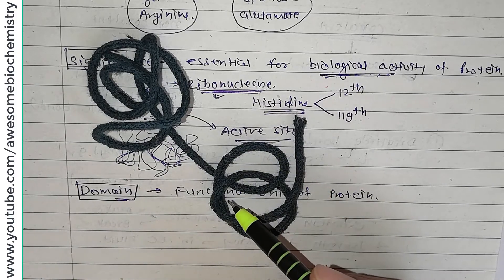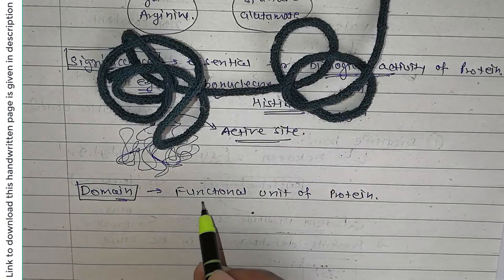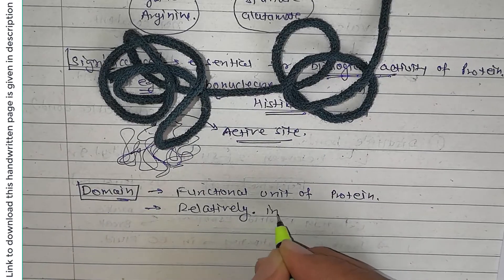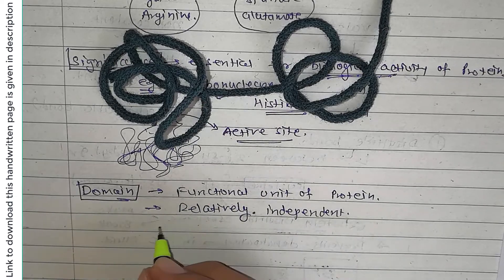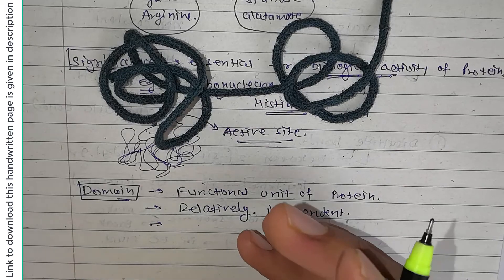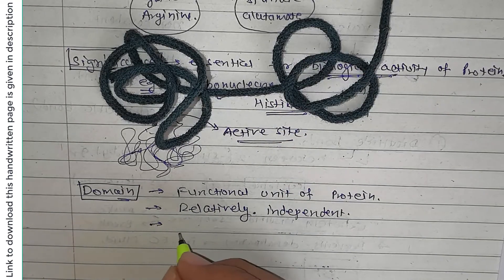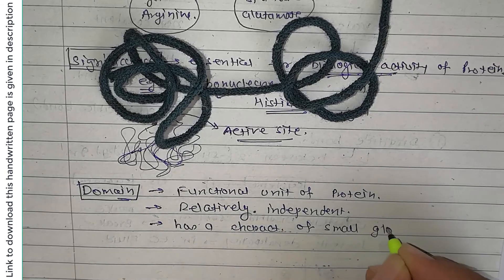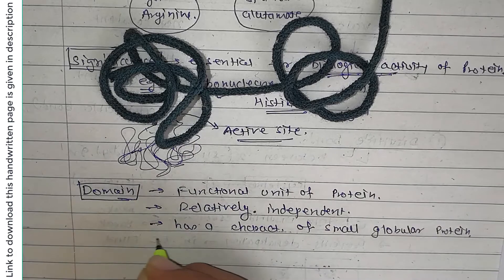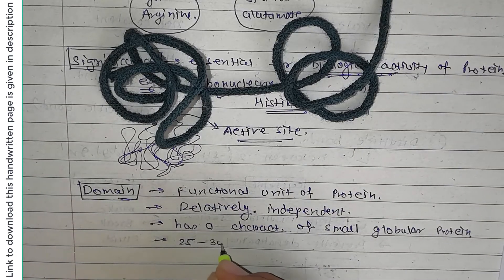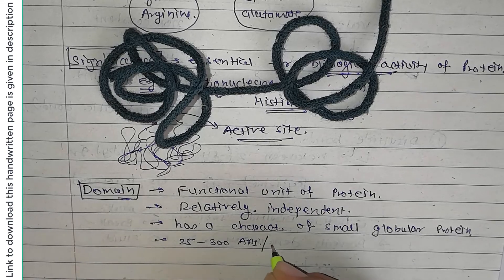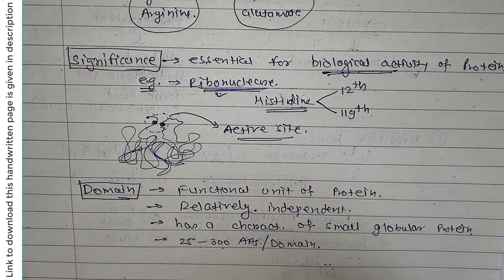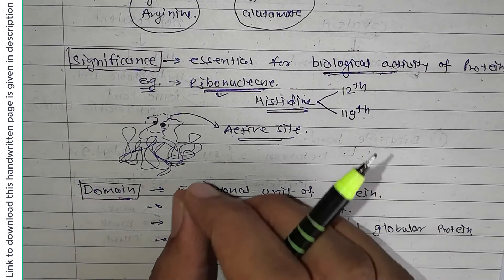A domain is a functional unit of protein that is relatively independent. Each domain has the characteristics of a small globular protein. In terms of size, a domain can contain as few as 25 amino acids and as many as 300 amino acids per domain. This concludes the discussion on the tertiary structure of protein.